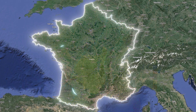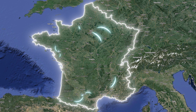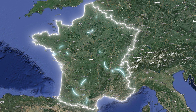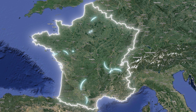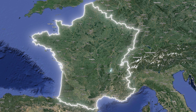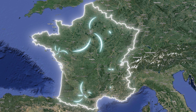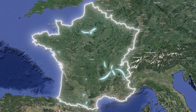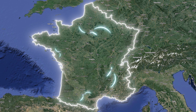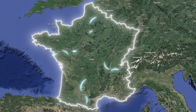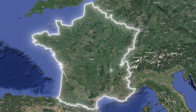The industrial revolution in France started during the early 19th century, opening avenues for people to move from agrarian culture to an industrialized one by moving to cities. But apart from urbanization, there are other reasons for low population density too.